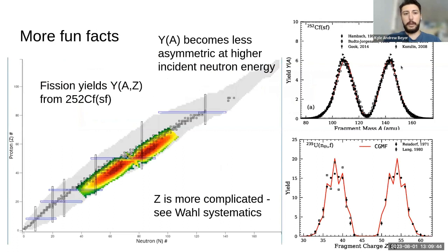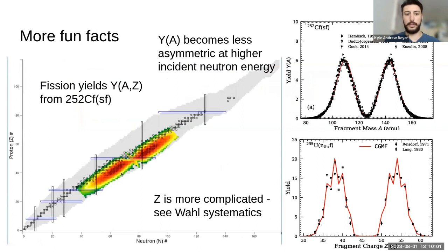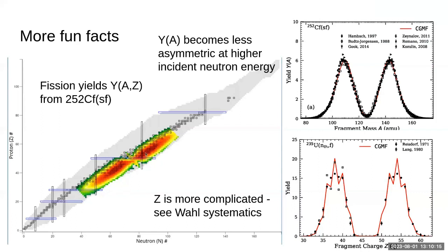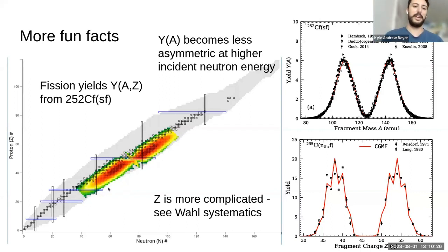So what properties do these fragments have? Here we have a chart of isotopes — more neutrons horizontally, more protons vertically. The colors, the more red, tell you the more likely a specific isotope is going to be produced in the spontaneous fission of Californium-252. We can see there are sort of two regions — a heavy fragment and a light fragment — two blobs for the heavy and for the light fragments.